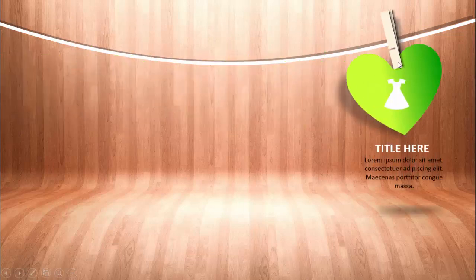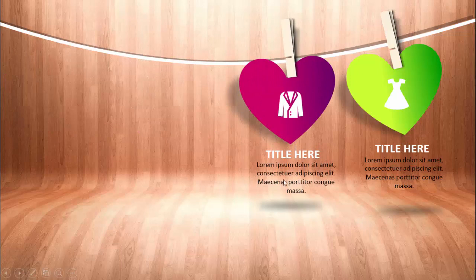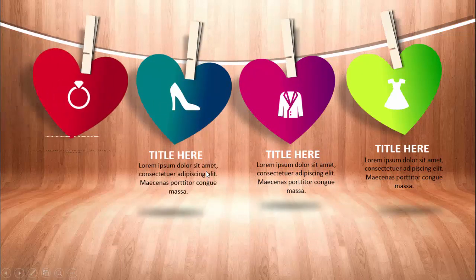In today's tutorial I'm going to show you how to create a four-options infographic slide in PowerPoint. The slide has a wooden background with a hanging rope. When you click, the first heart shape appears with an icon, title, and detail text, plus a shadow effect at the bottom. Each click reveals the next option with a different color combination — second, third, and fourth.